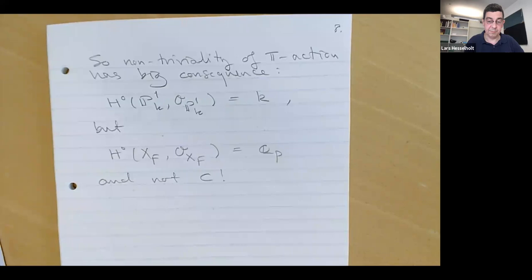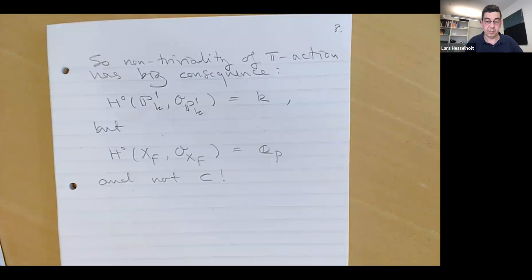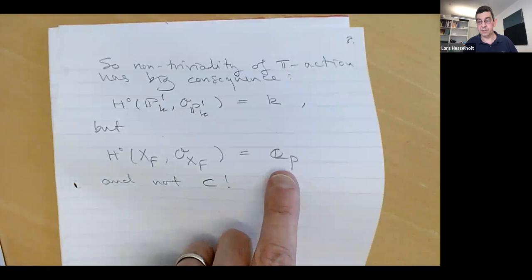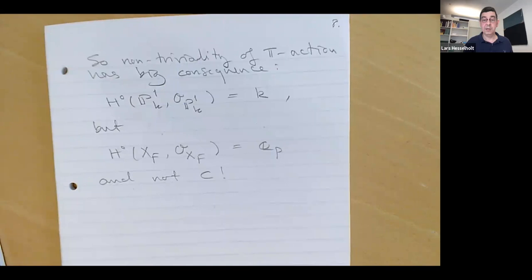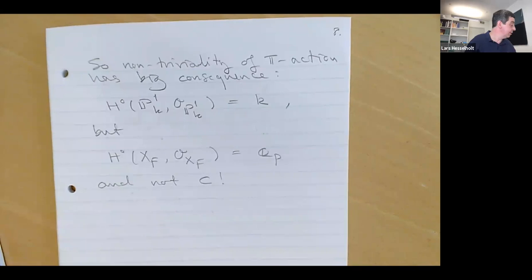This has fantastic consequences. Fargues and Scholze have used this in their geometrization of the local Langlands correspondence: when you look at the moduli stack of G-bundles on the Fargues-Fontaine curve, its global sections are the Q_p-points in the group G, not the C-points, which you might otherwise expect. And I think that was everything I had to say.